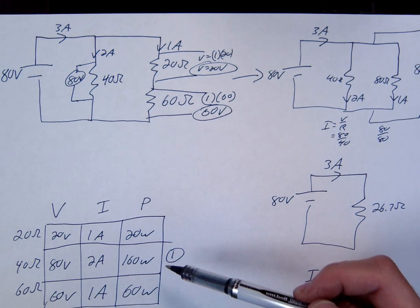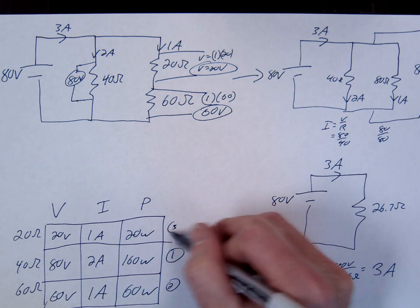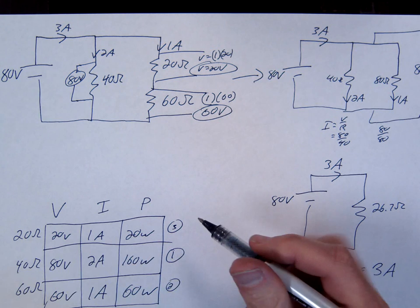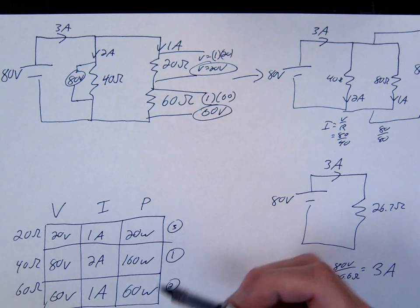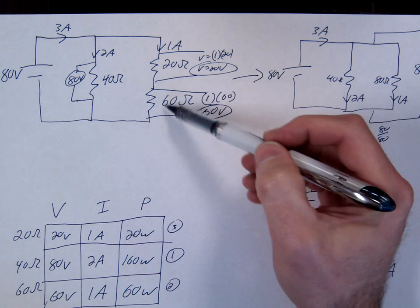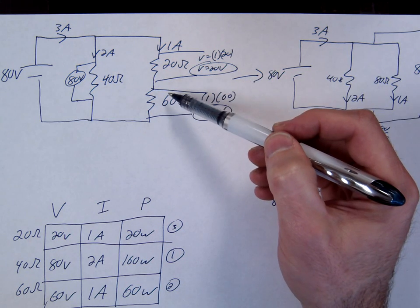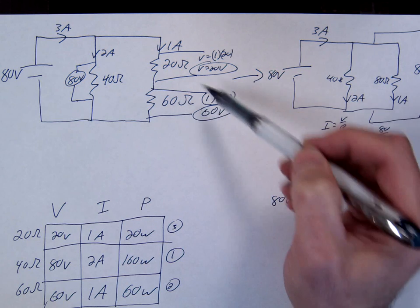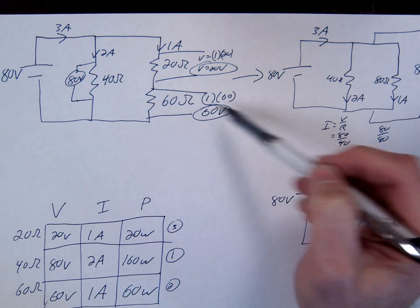And which one's next? 60. Why is 60 brighter than 20 this time? Because it's in series, which means they get the same current. So how do you tell which one's brighter? The one with the most voltage. So the one with the most resistance is going to therefore have the most voltage.